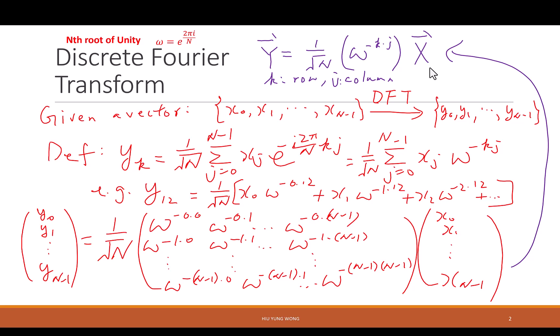The first thing on the top left is the nth root of unity, omega. I hope you can memorize it. You will take the nth root of 1. This is the solution: omega equals e to the power 2 pi i over capital N. This is a very important quantity that you need to memorize.